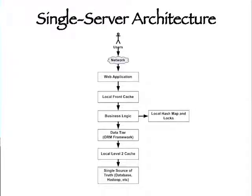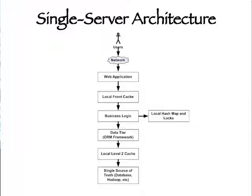To start, let's look at how a typical application looks on a single server. We have users hitting the application through the network, we have the application, maybe a local front cache to cache data produced by business logic, a business tier that uses hash maps and concurrency locks, a data tier with an ORM framework and usually a local level 2 cache. This all goes to a single source of truth such as a database, Hadoop clusters, or file system.